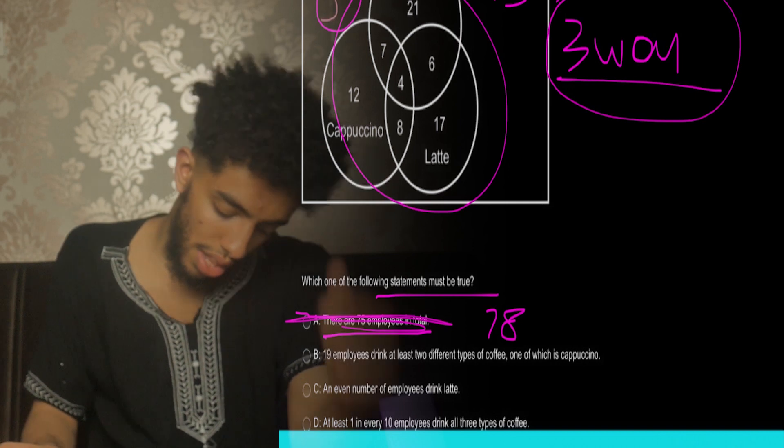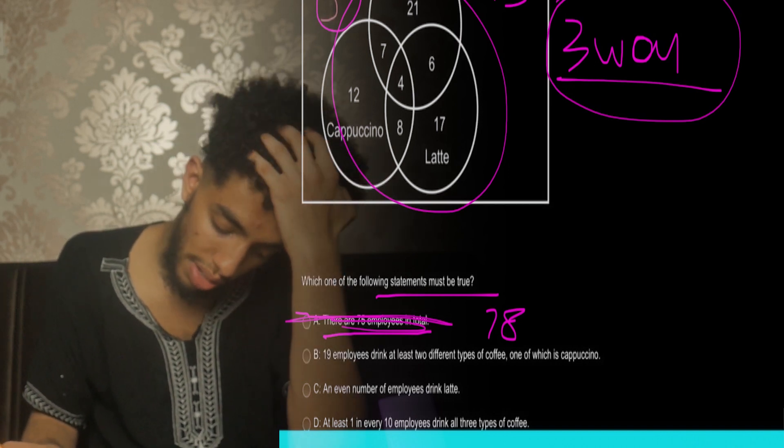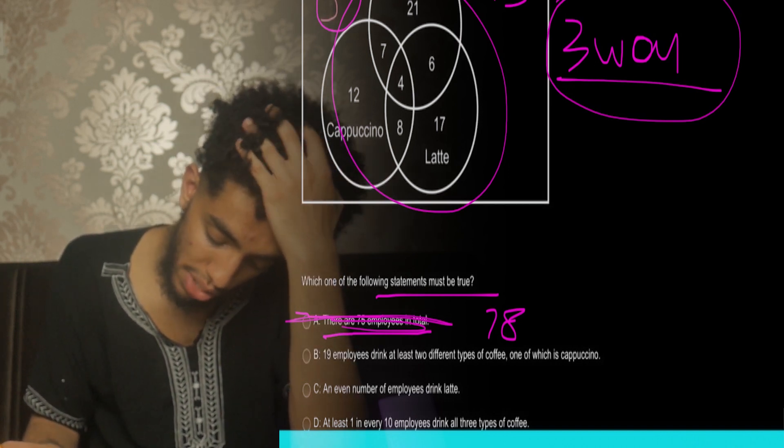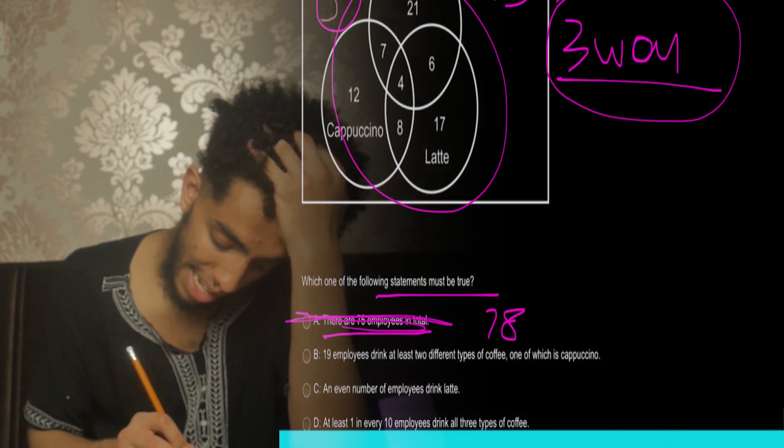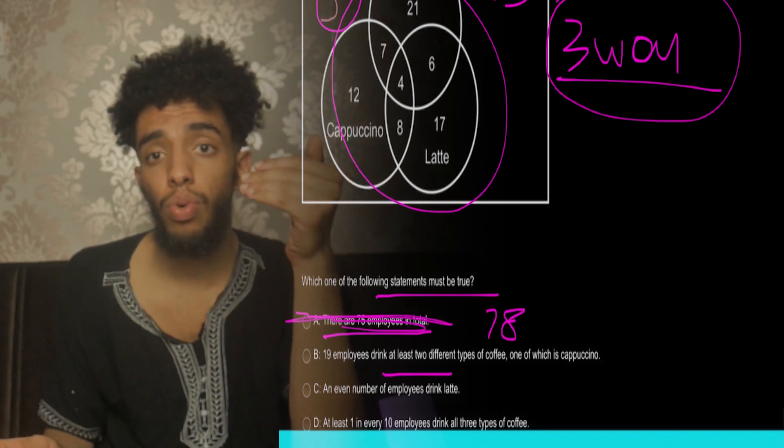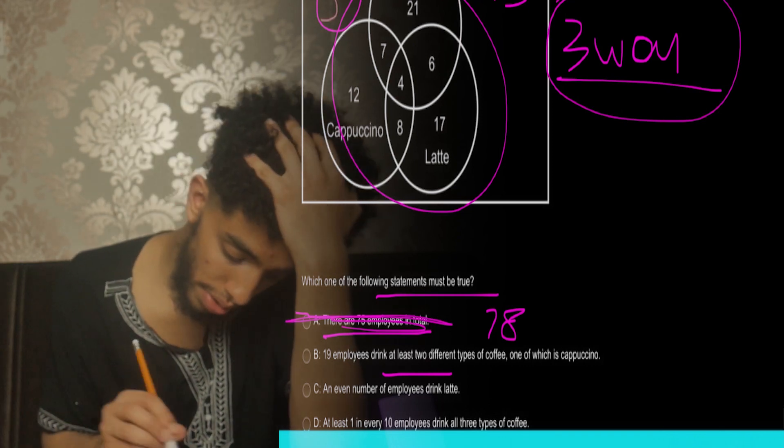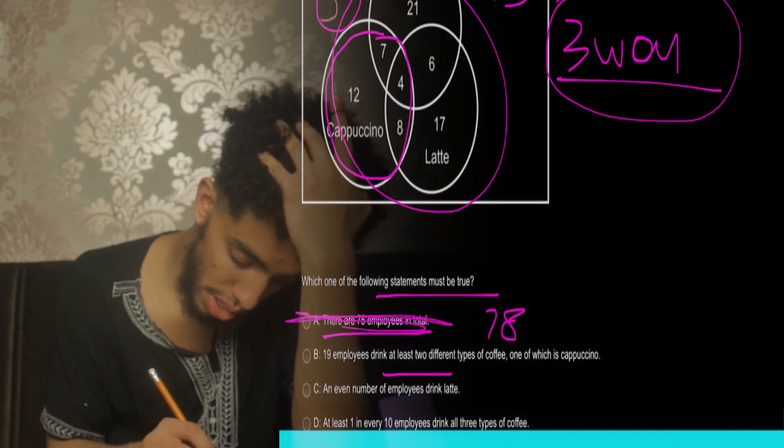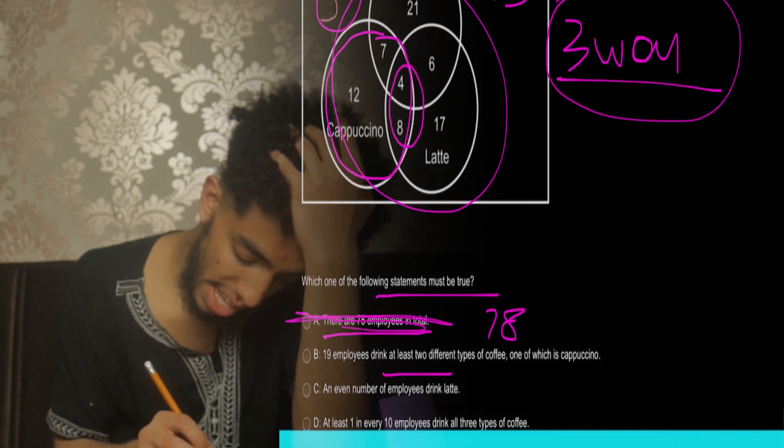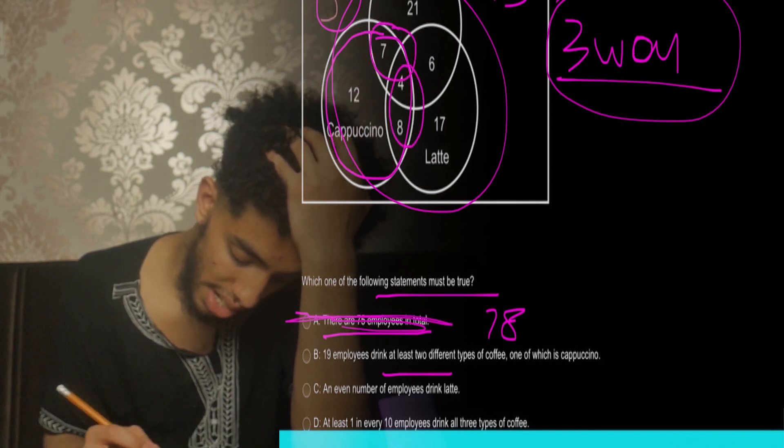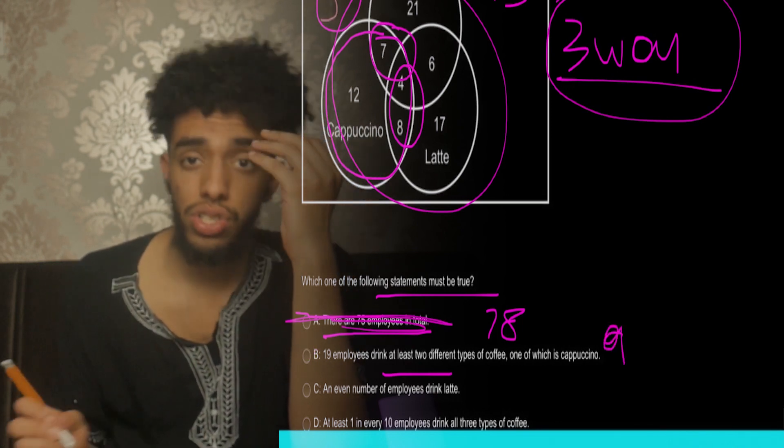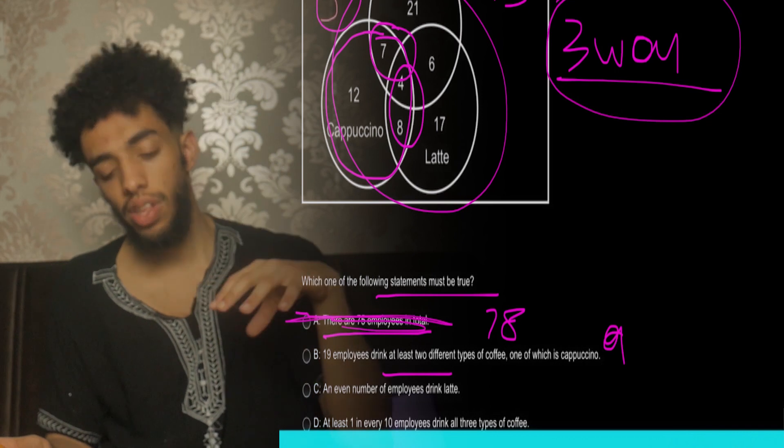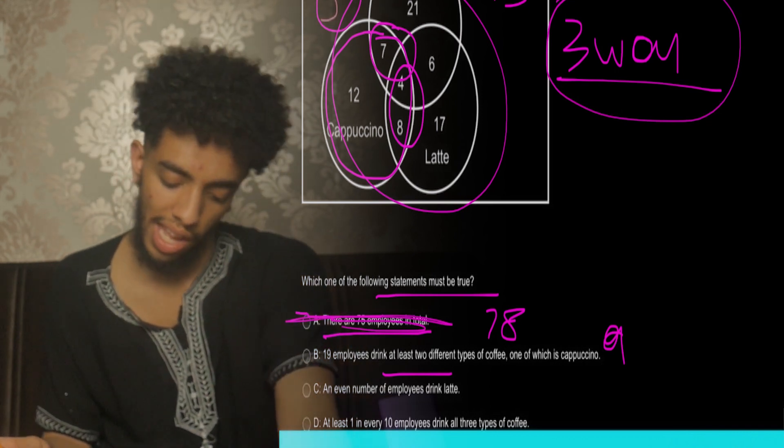19 employees drink at least two different types of coffee, one of which is cappuccino. At least, remember, can be two or more. So if we look for the circle of cappuccino, we know it's not going to be 12. At least, it's going to be 12, 4 plus 8, which is 12 plus 9, which is 19. Hence the statement is correct.